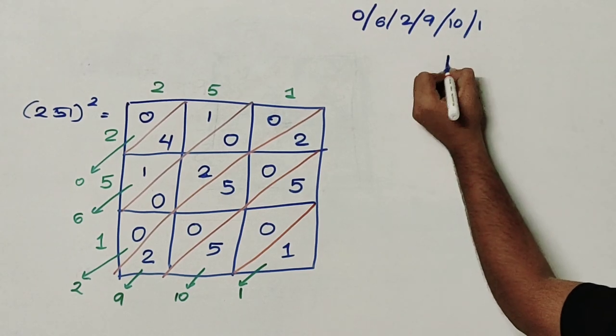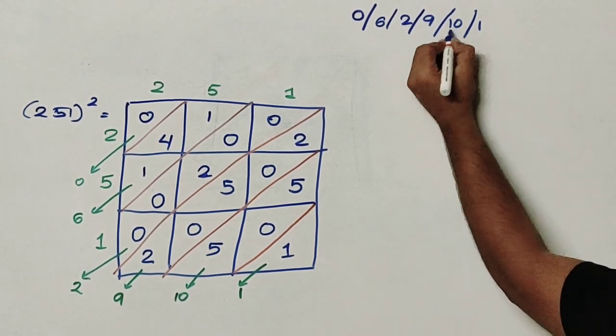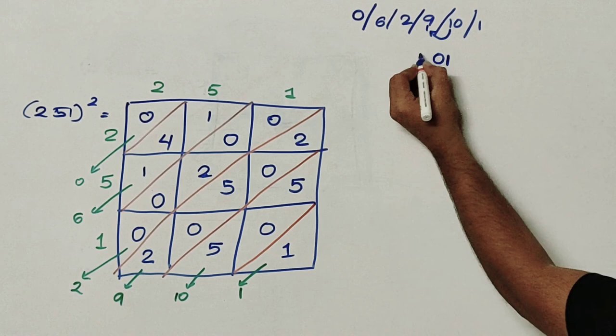So we will start from the last. 1, 0. I will carry forward 1. 9 plus 1, again 10. So 0.